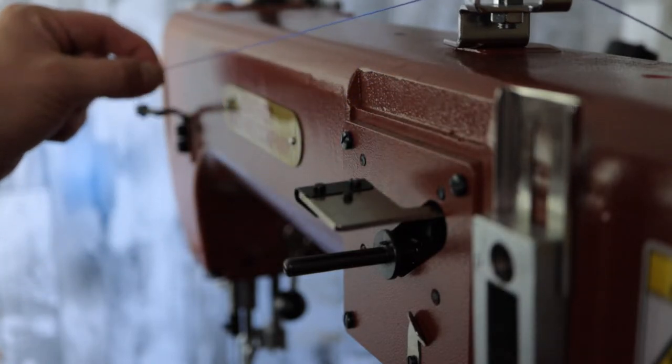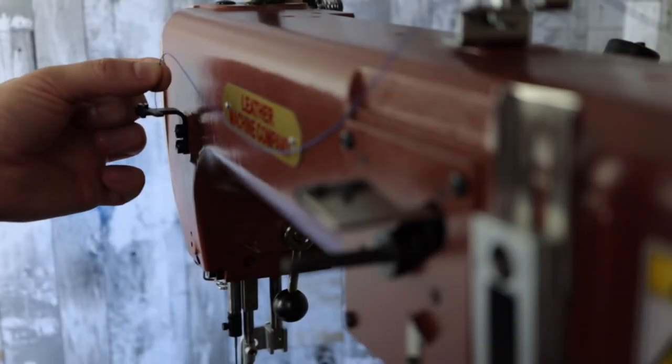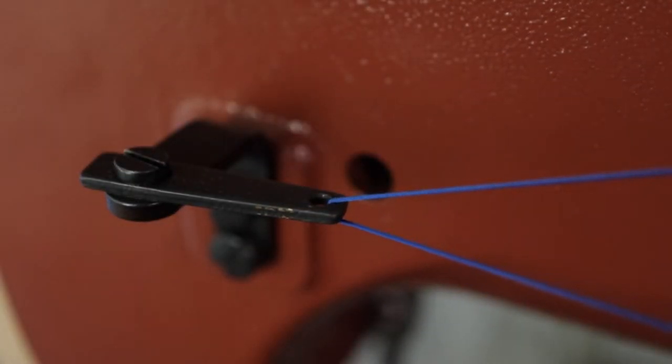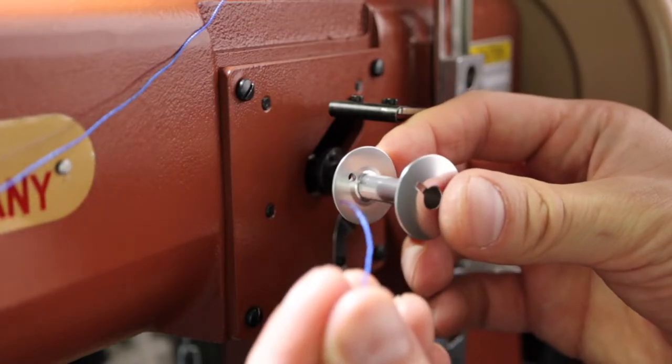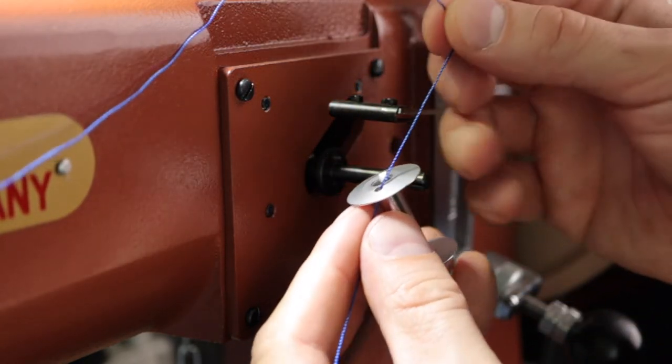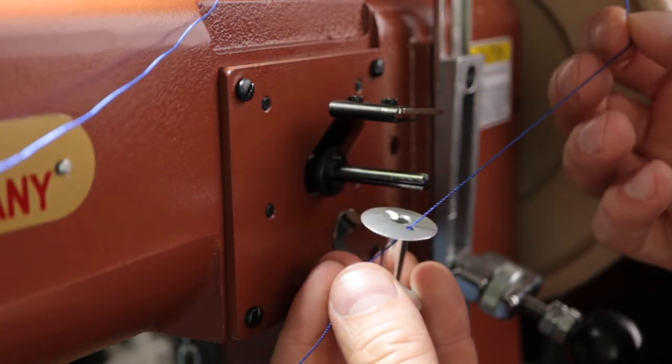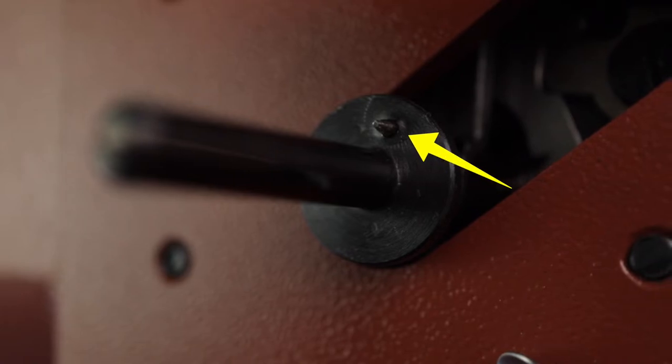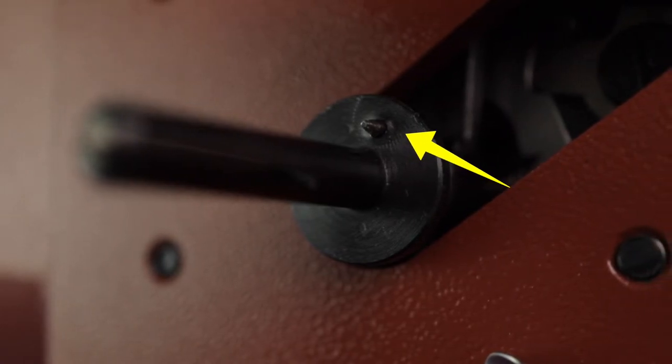Pull the thread down the machine head and insert the thread through the guide arm hole, then pull it back up the machine towards an empty bobbin. Thread the bobbin from inside to outside through the thread hole. Now place the bobbin on the winder with the thread facing you. On the winder there is a pin that gets inserted into the back side of the empty bobbin.